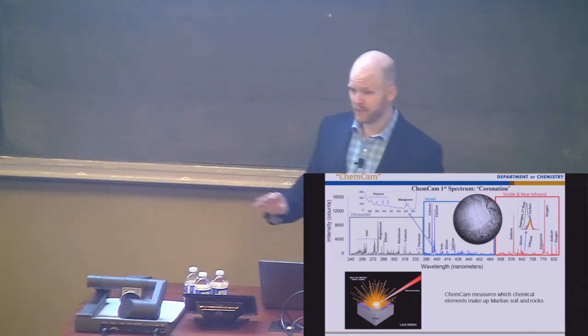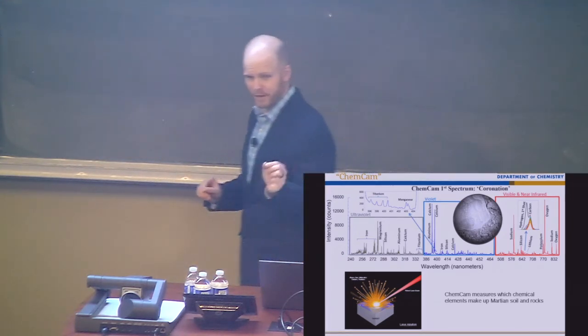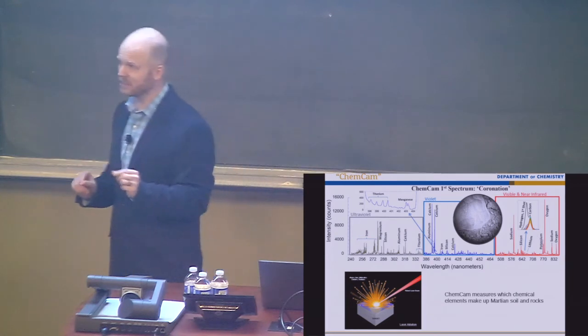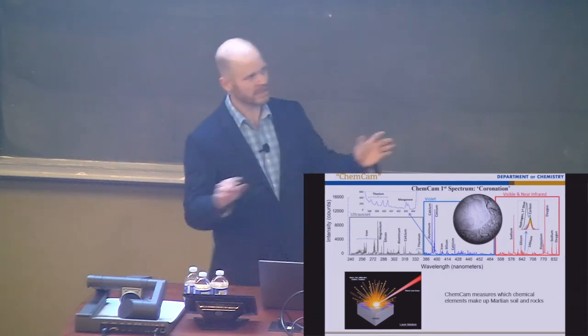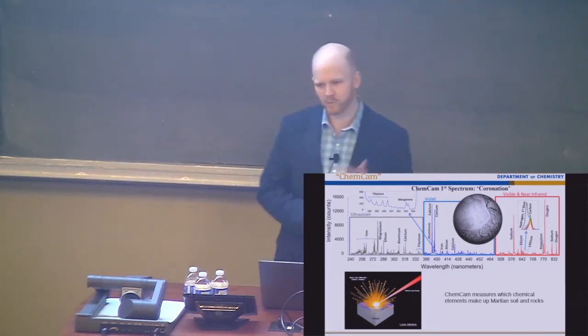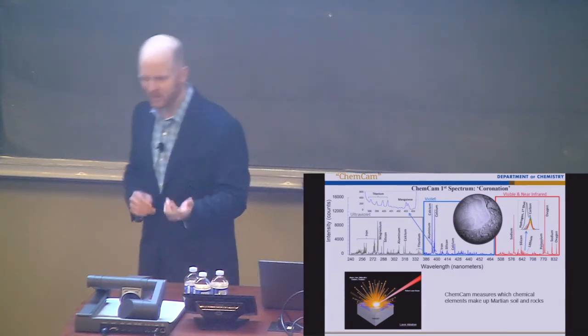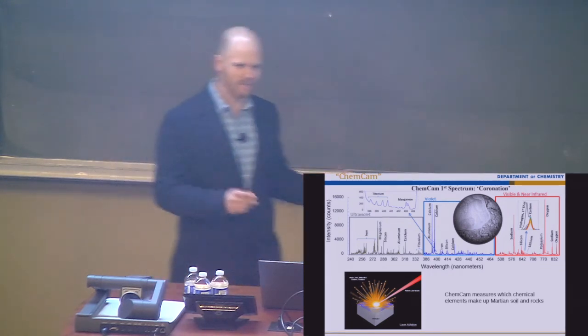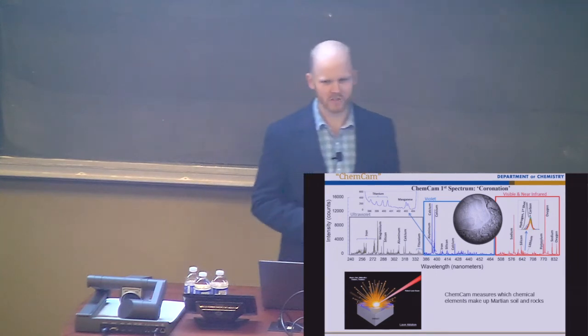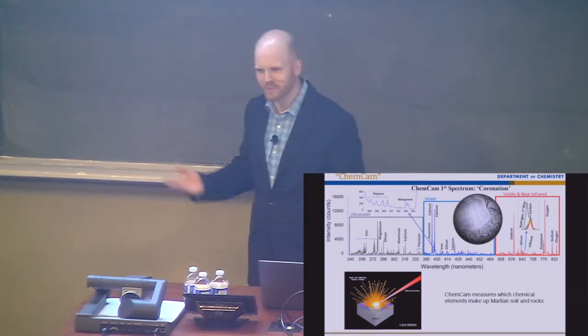And there's an instrument on board called the ChemCam, which has one of these laser-induced breakdown spectrometers that is, as we speak, blasting rocks on Mars and measuring their composition. So in the spectrum that you see on top, there are lots of different peaks that show up at different colors that correspond to all of these different elements on the periodic table. And so we're using lasers on a robot on Mars to measure the composition of Martian rocks and soil. So kind of like a Star Wars blaster, right?